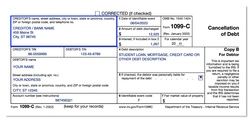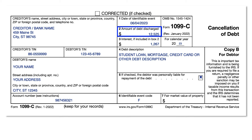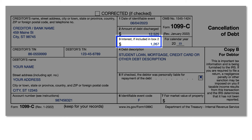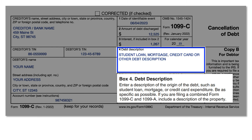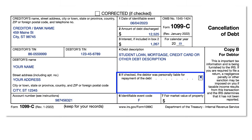The creditor is the entity cancelling your debt. In Box 1, you will see the date when the debt was cancelled. Box 2 reports the amount cancelled on your debt. The amount of interest that was forgiven is reported in Box 3. Box 4 provides a description of the debt being discharged. If you are personally liable for repayment of the debt, you will see Box 5 checked.